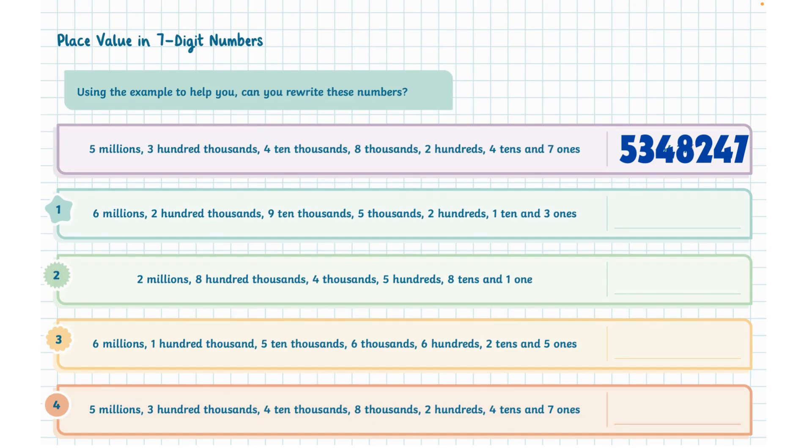I will have seven in ones position, four in tens position, two in hundreds position, eight, four, three, and five.